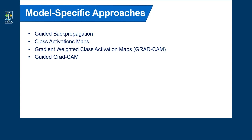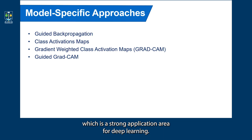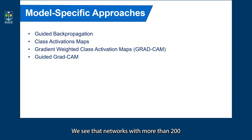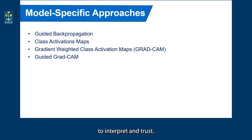The methods that we're going to discuss have been originally developed for convolutional neural networks. Taking as an example computer vision, which is a strong application area for deep learning, we see that networks with more than 200 layers deep have been developed. Such complexity makes these models hard to interpret and trust.